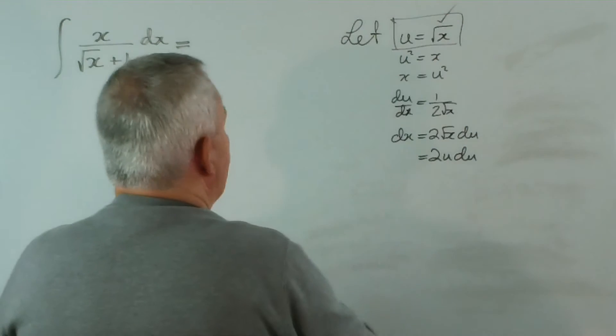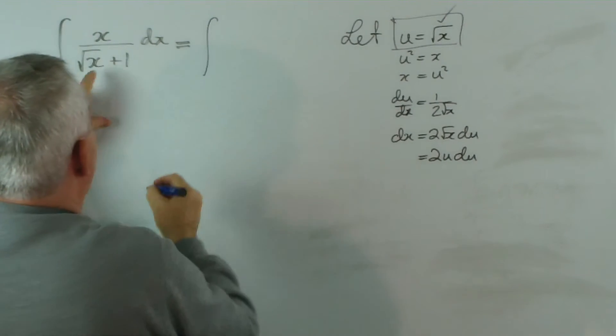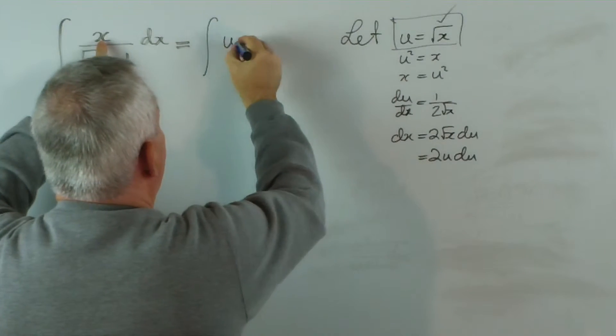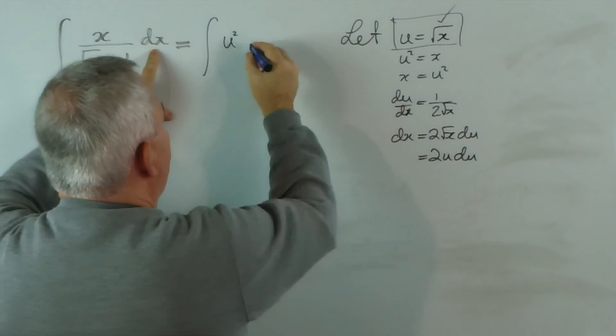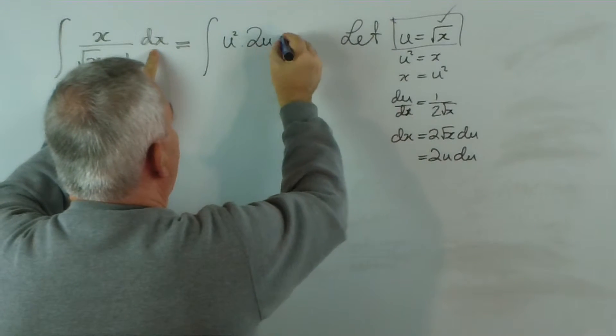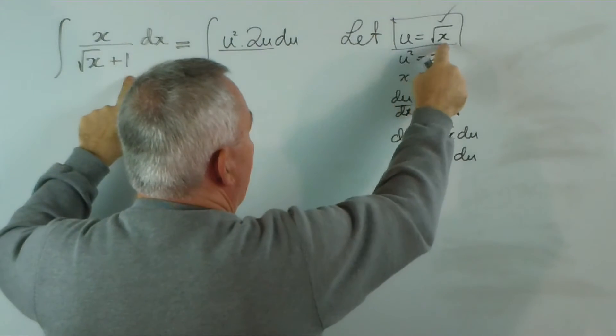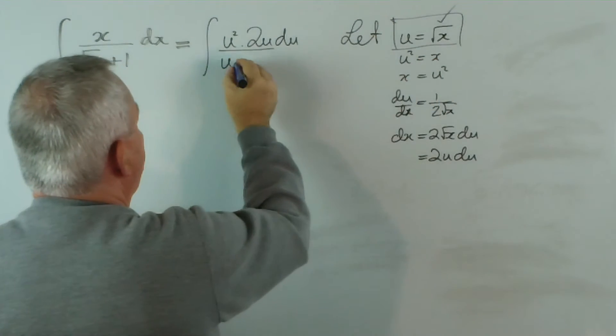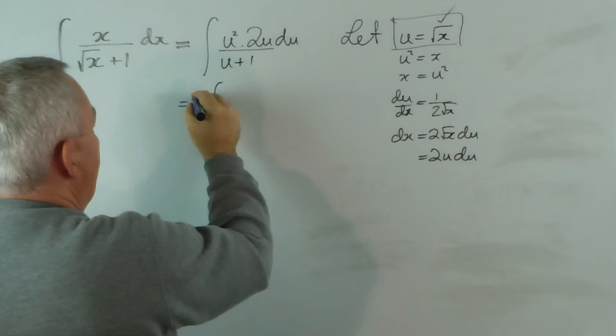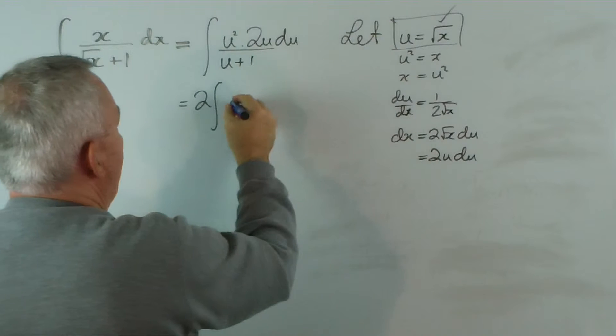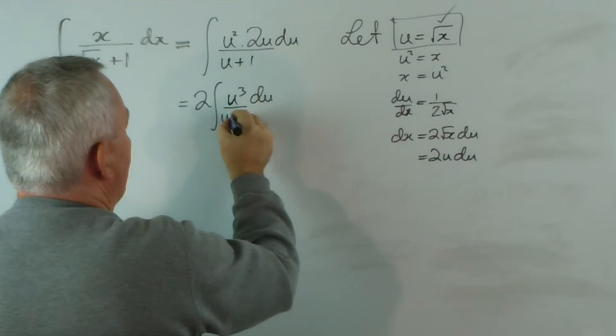I've already performed this work, so our integral is going to be the integral of x, which is u squared, dx, which is 2u du, over root x plus 1, which is going to be u plus 1. Which is the integral, moving the 2 outside, as I said, of u cubed du on u plus 1.